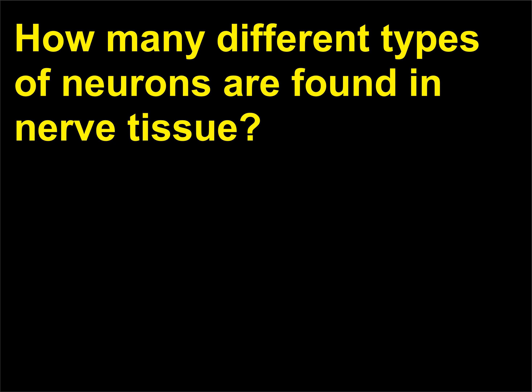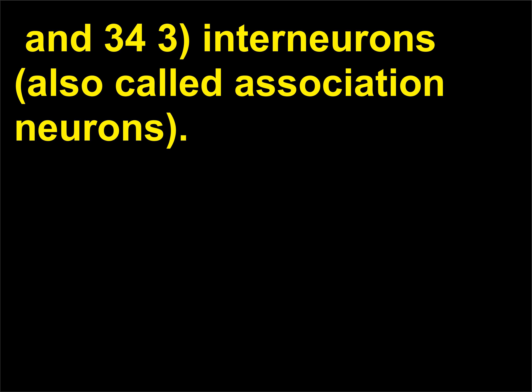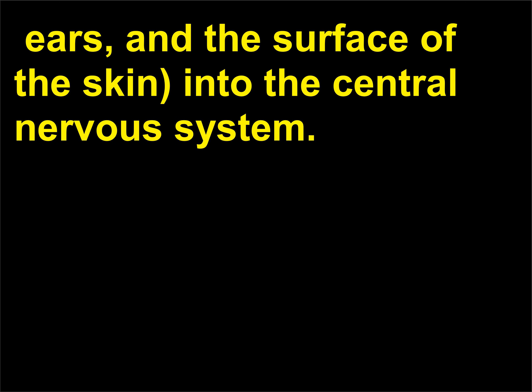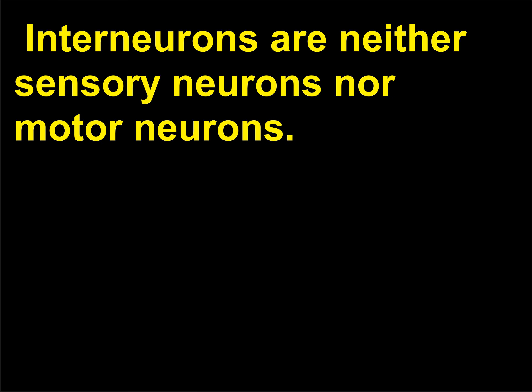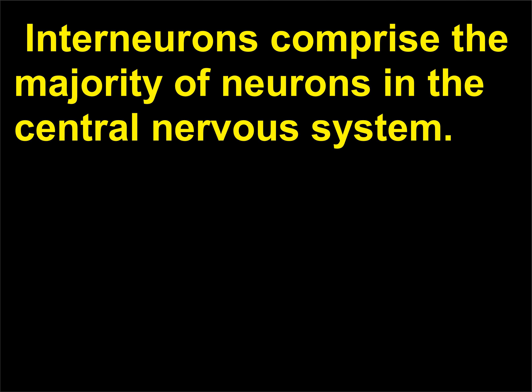How many different types of neurons are found in nerve tissue? There are three main types of neurons: 1. Sensory neurons, 2. Motor neurons, and 3. Interneurons, also called association neurons. Sensory neurons conduct impulses from sensory organs, eyes, ears, and the surface of the skin, into the central nervous system. Motor neurons conduct impulses from the central nervous system to muscles or glands. Interneurons are neither sensory neurons nor motor neurons. They permit elaborate processing of information to generate complex behaviors. Interneurons comprise the majority of neurons in the central nervous system.